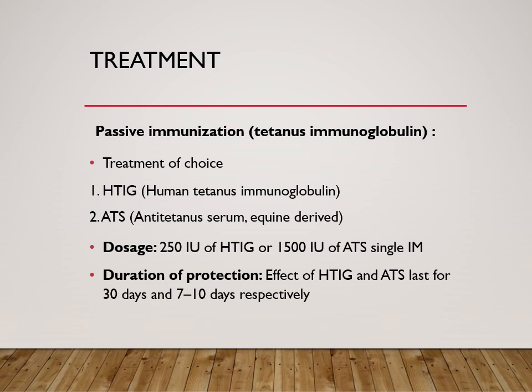For treatment, first we have to take a history of whether the person is vaccinated or not. Passive immunization — you have to immediately give prepared antibodies known as immunoglobulins. This is known as tetanus immunoglobulin, because the action of this disease is mainly due to the toxin and you must immediately neutralize it. There are two types: one is the human tetanus immunoglobulin, and another is the anti-tetanus serum, which is equine-derived. The equine-derived type has more anaphylactoid reactions, so you have to be careful when giving it. Doses are different for each, and it is given intramuscularly.